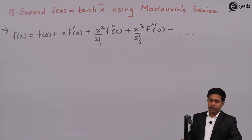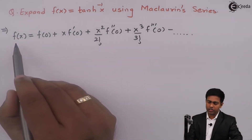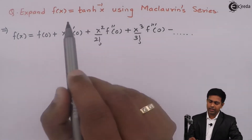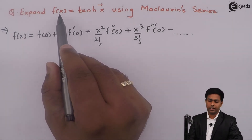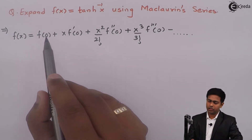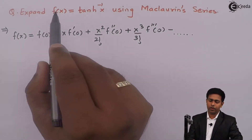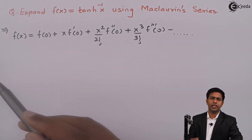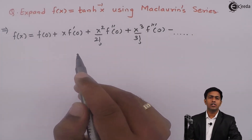Now if we want to expand using the Maclaurin series, we consider f(x) as tanh⁻¹x. Then substituting x = 0 gives us the value of f(0). To get f'(0) we find the derivative of f(x), giving us f'(x), and then substitute x = 0 to get f'(0).